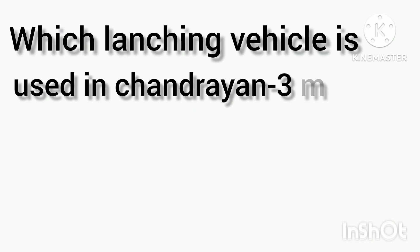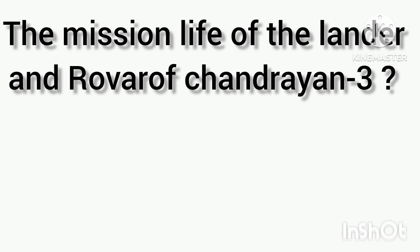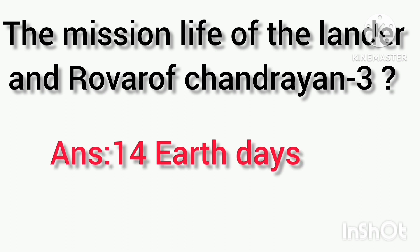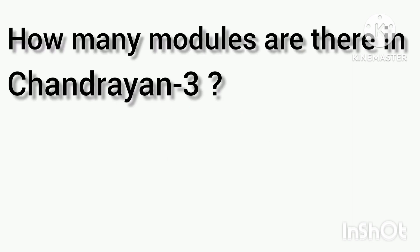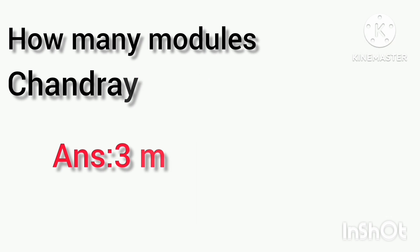The twelfth one: which launching vehicle is used in the Chandrayaan-3 mission? The answer is GSLV. The thirteenth one: what is the mission life of the lander and rover of Chandrayaan-3? The answer is 14 earth days. The fourteenth one: how many modules are there in Chandrayaan-3? The answer is three modules.